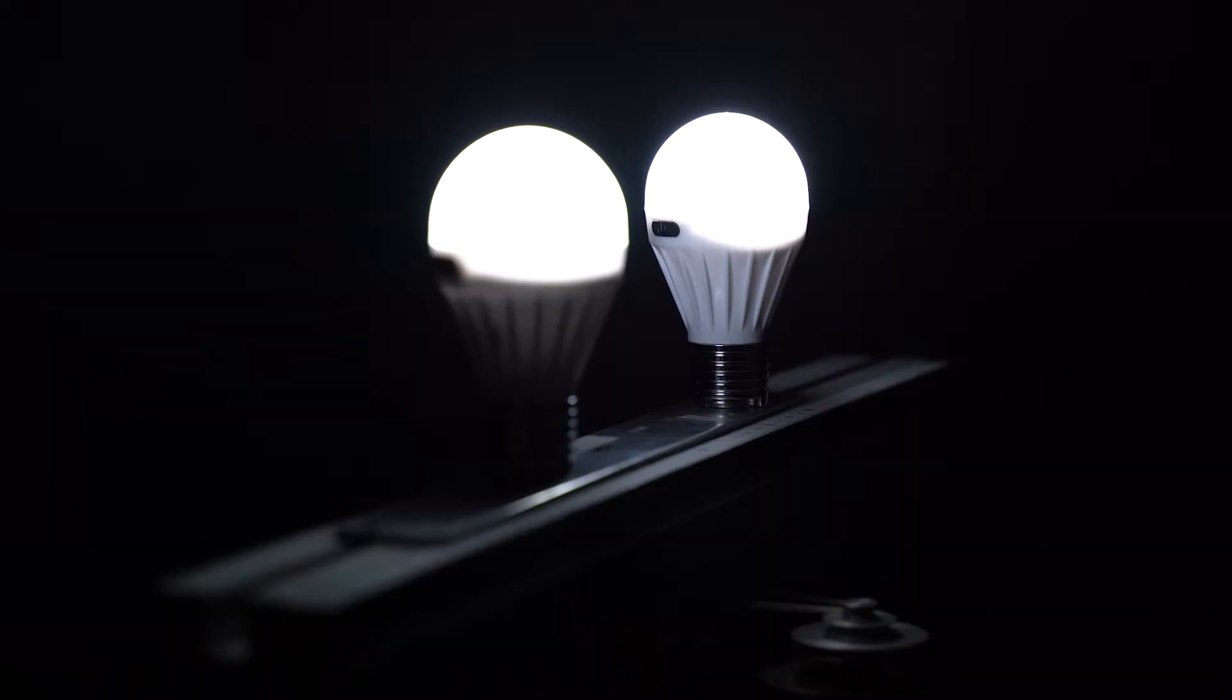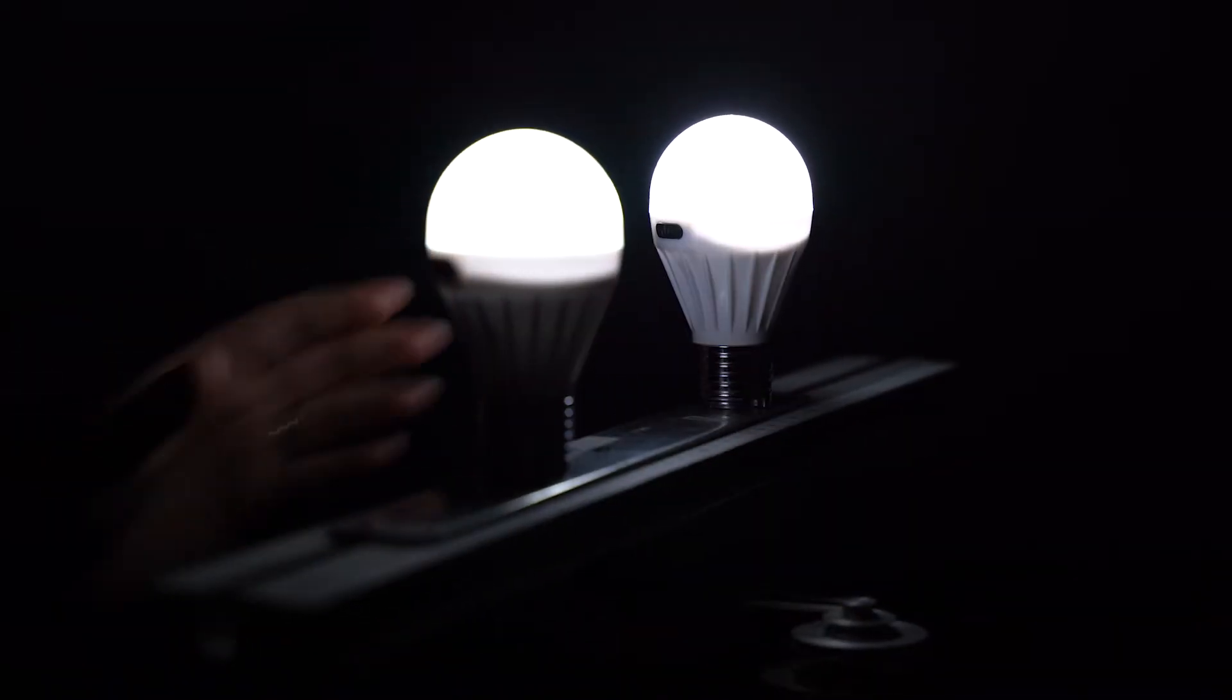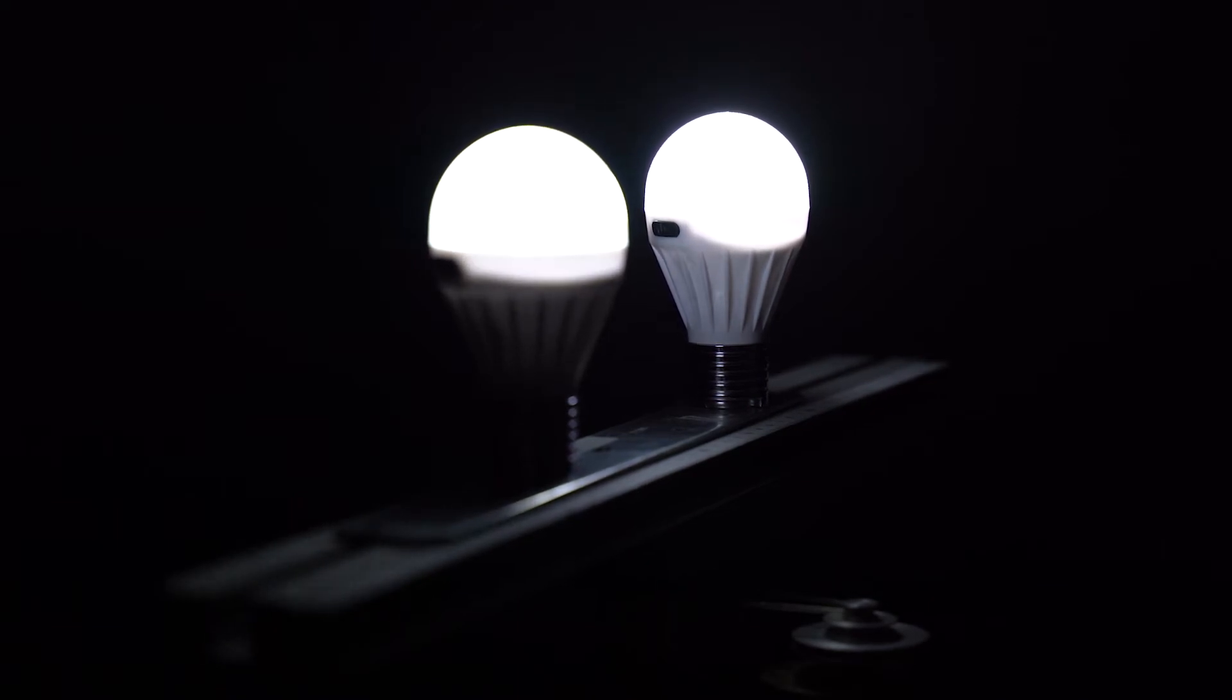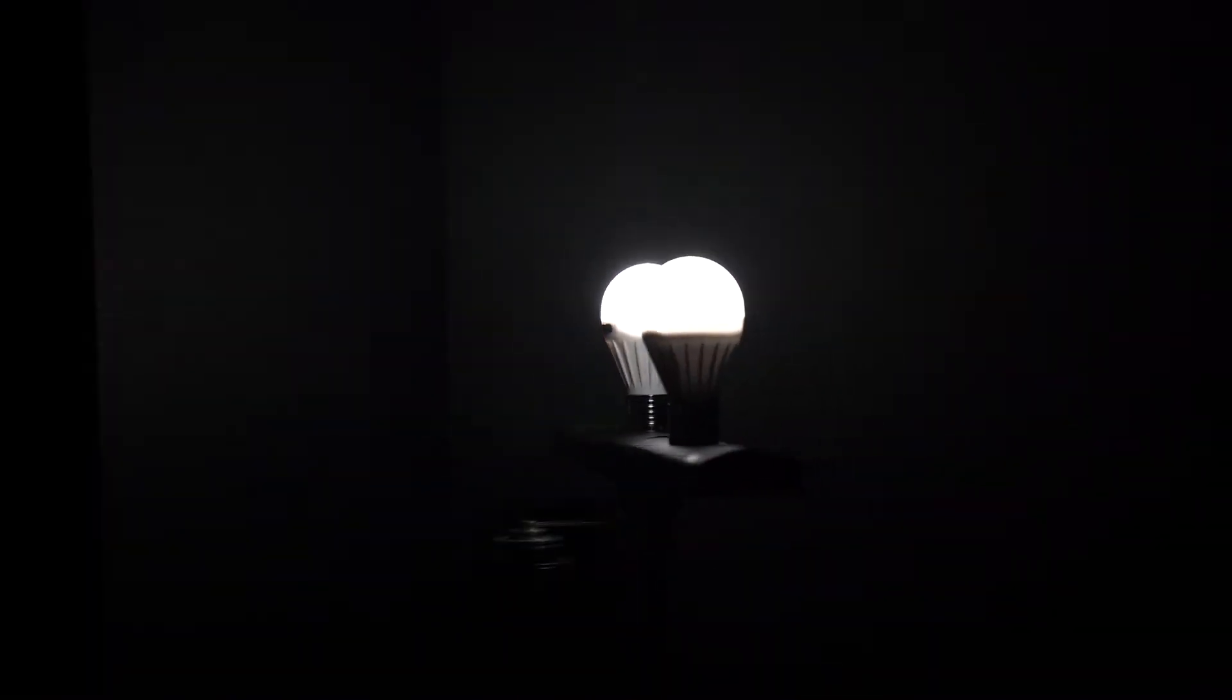Let's now repeat this experiment with one of the bulbs at its lower luminosity setting, representing a star with a cooler surface temperature. We start the bulbs revolving.